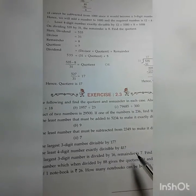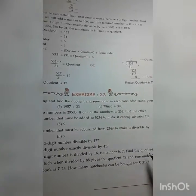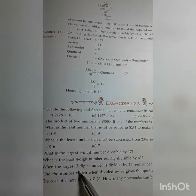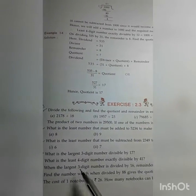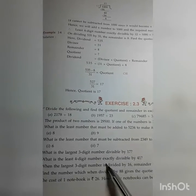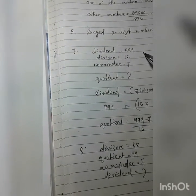divisor is given, remainder is given, and dividend is also given. Because here written largest three-digit number means 999. Here you see,